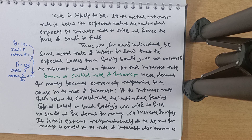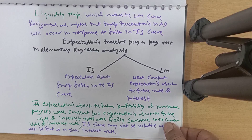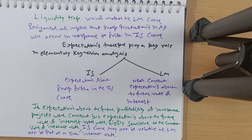In a liquidity trap, the rate of interest is at its lowest and cannot go further down. A rational individual's expectation is that the rate of interest can only go up. If rate of interest rises, bond prices fall due to the inverse relationship, causing capital losses. Due to that fear, people will not invest in bonds and will hold all their money. This expectation is what makes the LM curve horizontal, causing sharp fluctuations in AD in response to shifts in IS.